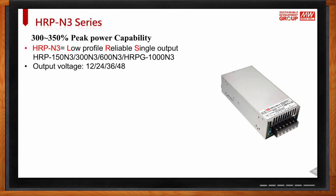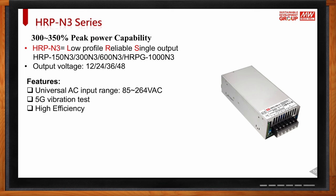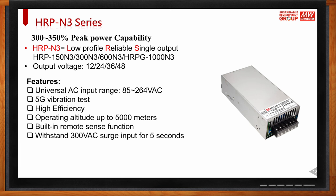Output voltages available are 12V, 24V, 36V, and 48V. One key feature of the HRP is universal AC input from 85V up to 264V — customers don't need to identify the input voltage for different countries, as the power supply auto-detects it. Some power supplies require a manual switch to select 120V or above 200V input, but the HRP handles this automatically. The HRP also features 5G vibration testing, so it can operate in vibrating environments, and achieves 94 to 95 percent efficiency.